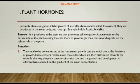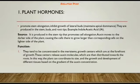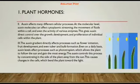Auxins tend to be concentrated in the meristems, which are growth centers at the forefront of growth. These centers release auxin molecules which are then distributed towards the roots. In this way, the plant can coordinate its size, growth, and development of different tissues based on the gradient of auxin concentration.